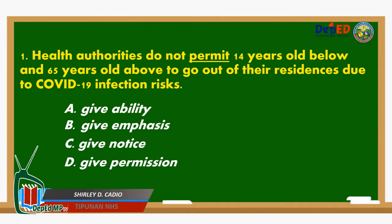Number 1. Health authorities do not permit 14-year-olds and below and 65-year-olds and above to go out of their residences due to COVID-19 infection risks. The underlined word is 'permit.' What is the meaning of the word permit? A. Give ability. B. Give emphasis. C. Give notice. D. Give permission.